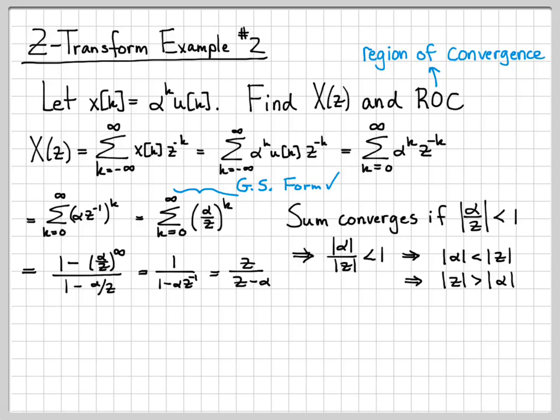If you wanted to, you can multiply top and bottom by Z. So this would turn into Z over Z minus alpha. So whether you like this form or this form, they're totally equivalent, but sometimes different textbooks write the answer in either this form or this form.